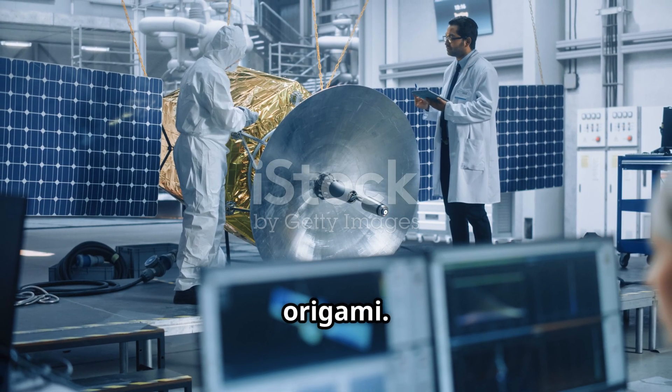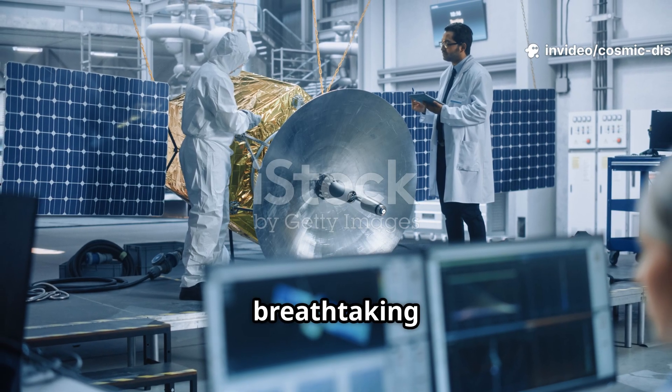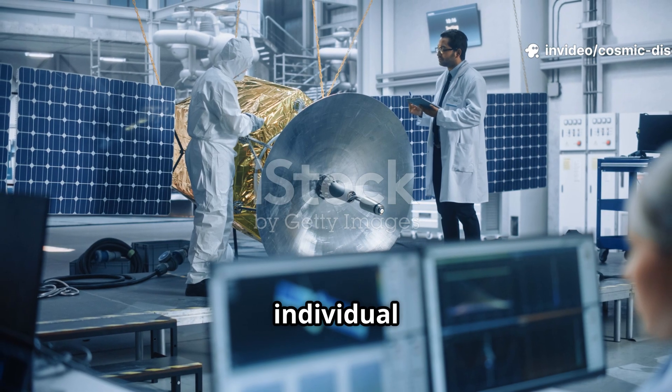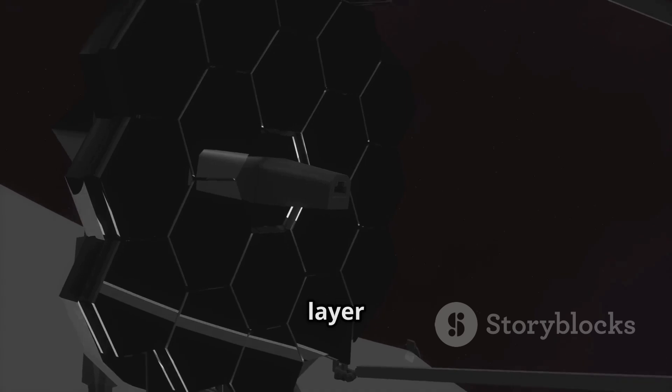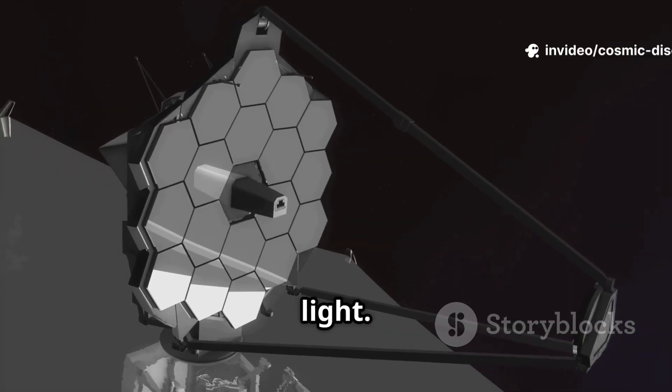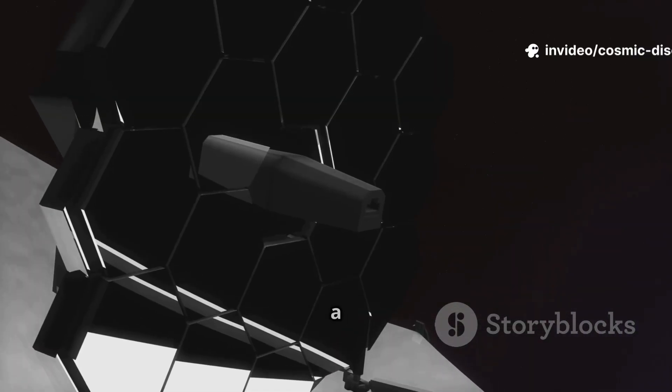The solution was a work of genius, inspired by the art of origami. The telescope's primary mirror, a breathtaking structure six and a half meters across, was made from 18 individual hexagonal segments. Each segment is coated in a microscopically thin layer of pure gold, chosen because it is exceptionally good at reflecting infrared light. These segments were designed to fold up like the petals of a flower.